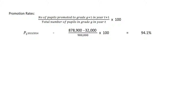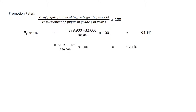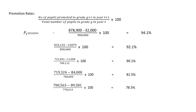The calculation appears as follows. For the promotion rate: number of people promoted to grade G+1 in year T+1, over the total number of people in grade G in year T, multiplied by 100. Going back to the table, we subtract the repeaters from the enrollment to get the actual number that received promotion. From primary 1 to primary 2, that gives 94.1%. Continuing that trend, the next level gives 92.1%, then 90.1%, then 81.5%, and then 78.5%.